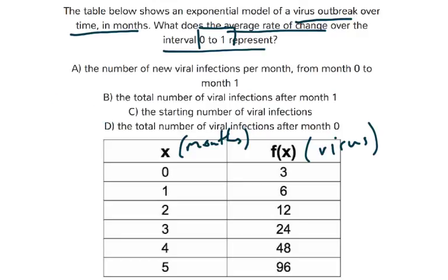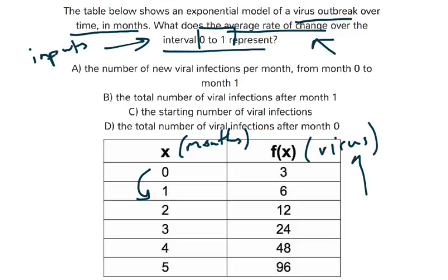Answer A is: the number of new viral infections per month from 0 to 1. That sounds about right. The interval is 0 to 1, and remember the interval is actually with inputs — they want to know from month 0 to month 1. We want to know the average rate of change over that time, which is how much the virus is spreading — the cases at month 0 compared to the cases at month 1. That's going to be the number of new cases, so A sounds pretty good.